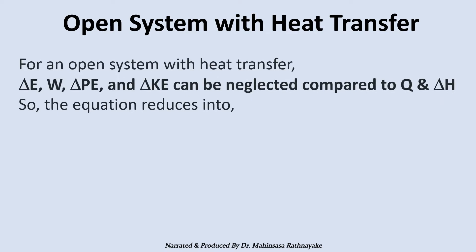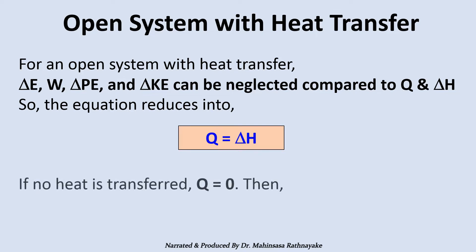For an open system with heat transfer, delta E, W, delta PE, and delta KE can be neglected compared to Q and delta H. So the equation reduces to Q is equal to delta H. If no heat is transferred into or out of the system, that means Q is equal to zero, then delta H is equal to zero.